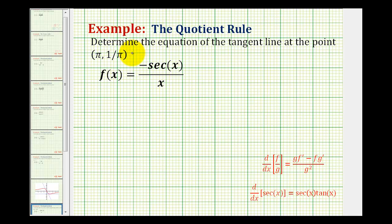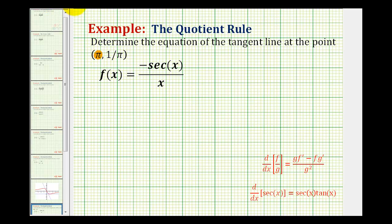In this example, we need to determine the equation of the tangent line at the point pi, 1 over pi. So in order to determine the slope of this tangent line, we'll have to find the derivative of the given function, and then evaluate that function at x equals pi. So let's start by determining the derivative function.